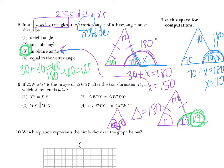Number 9 says, if triangle W prime, X prime, Y prime is the image of WXY after the transformation rotation of 90, which statement is false. So when we think about a rotation here, rotation of 90 preserves distance, which means that triangles are congruent. So I'm going to immediately cross off number 3.